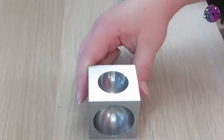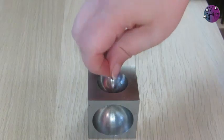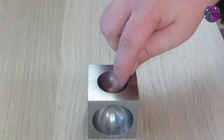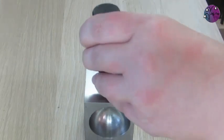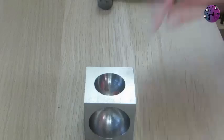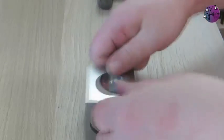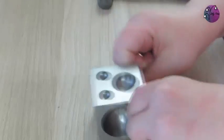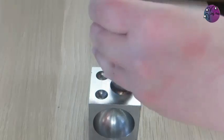Then I'll move to the slightly smaller hole and do the same, and I'll just keep moving down the sizes on the dapping block and switching to a smaller dapping punch as necessary.